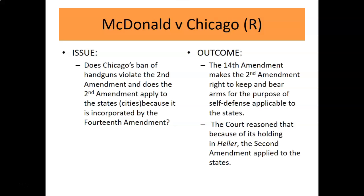This case also gives us a vocabulary term: selective incorporation. Selective incorporation basically means that the states have to follow the Bill of Rights. When the Bill of Rights was initially passed, it was assumed that only the federal government had to follow these regulations. Over the course of our history, through Supreme Court decisions, the Court has said that selectively, states have to follow certain amendments as well. But instead of doing a blanket statement, the Court has to go in bit by bit and apply it to states individually. This is the case that gives us the Second Amendment applying to states.